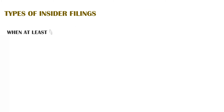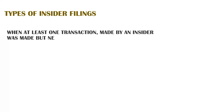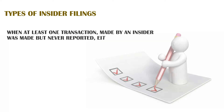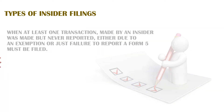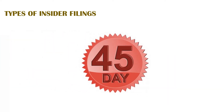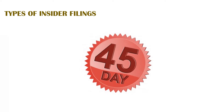When at least one transaction made by an insider was made but never reported, either due to an exemption or just failure to report, a Form 5 must be filed. The filing must be made with the SEC no later than 45 days after the company's fiscal year ends.